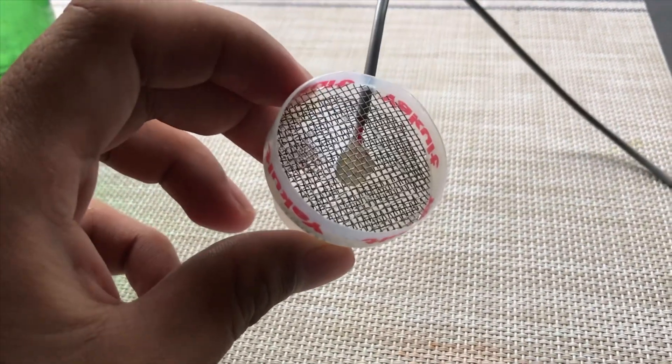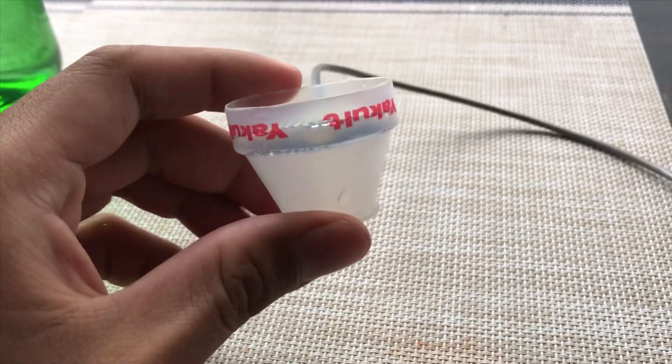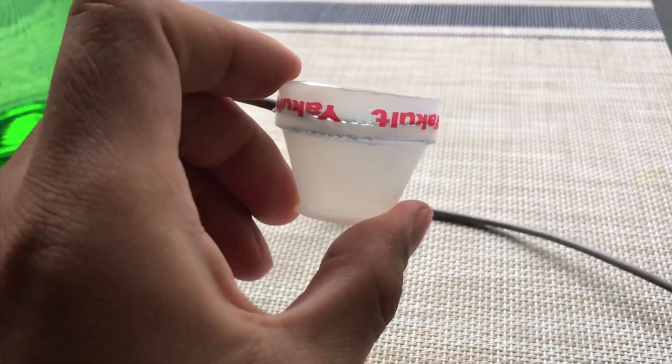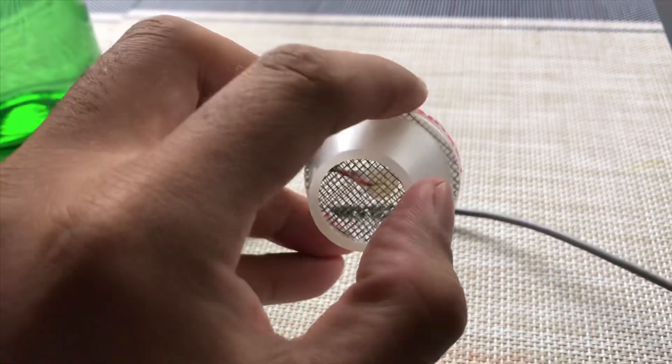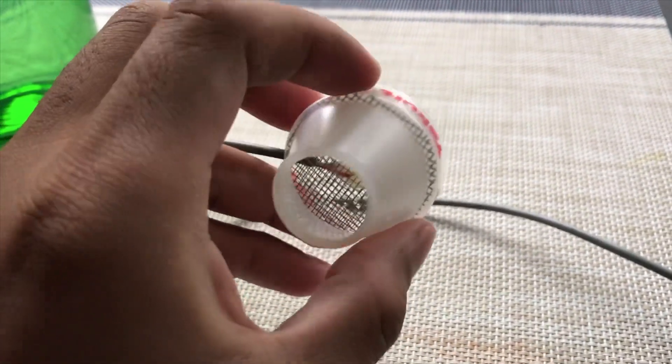So I didn't bother to film when I cut out the Yakult bottle and the steel mesh and also the glue stick that is on the middle.